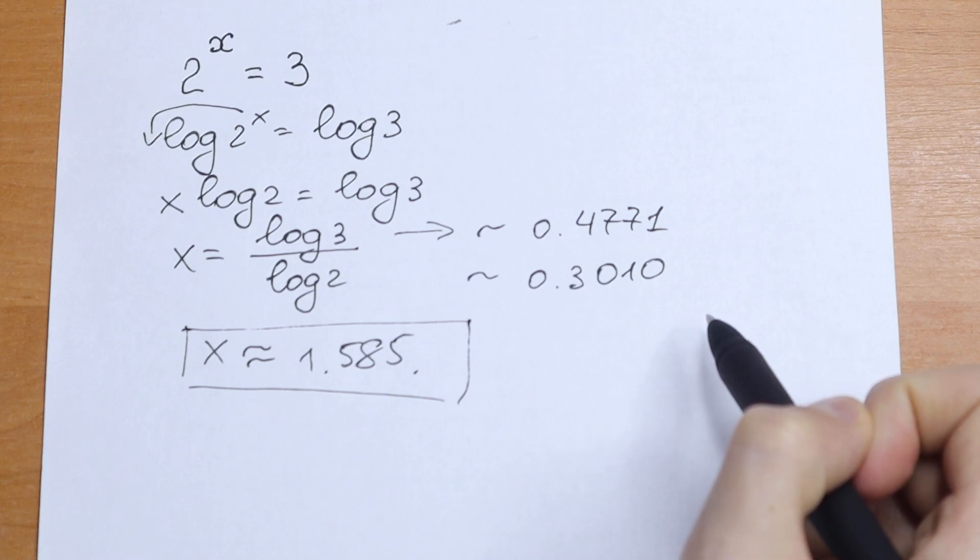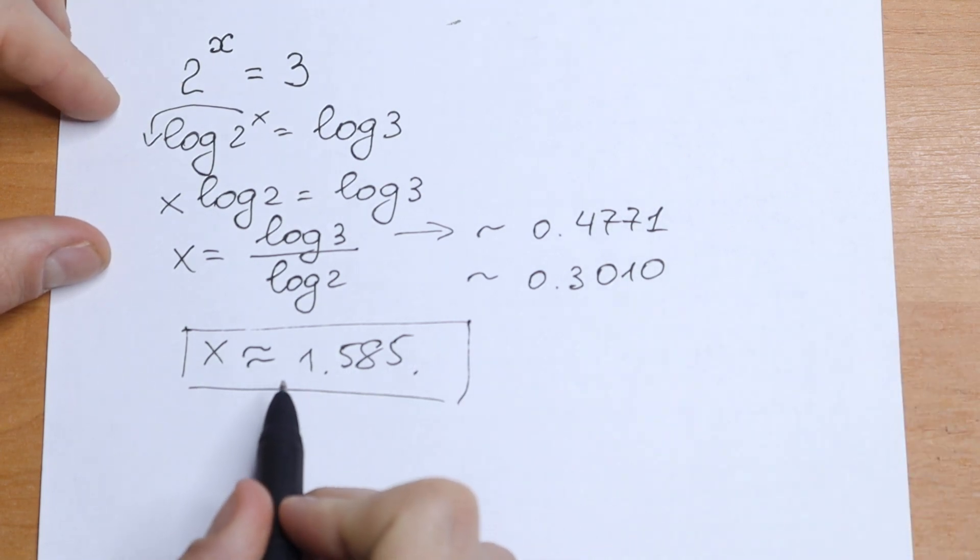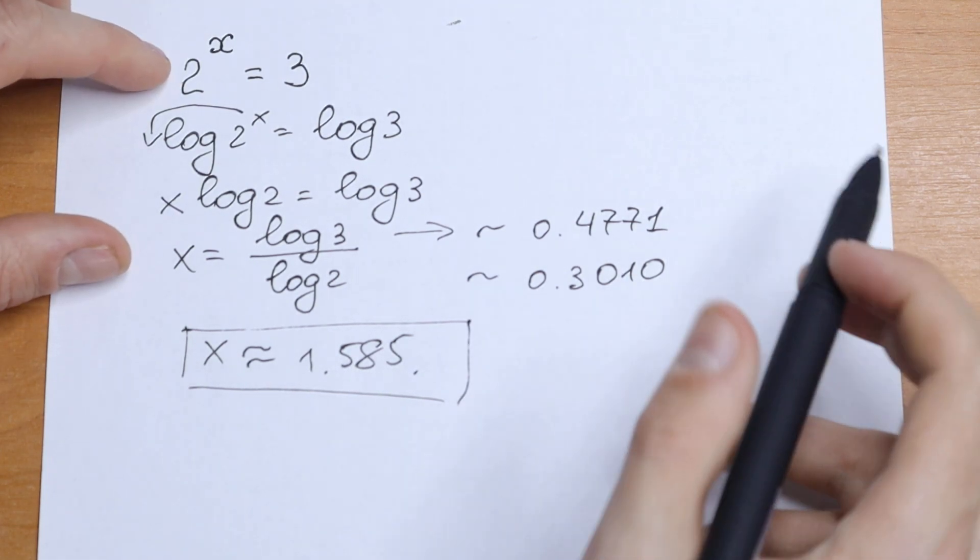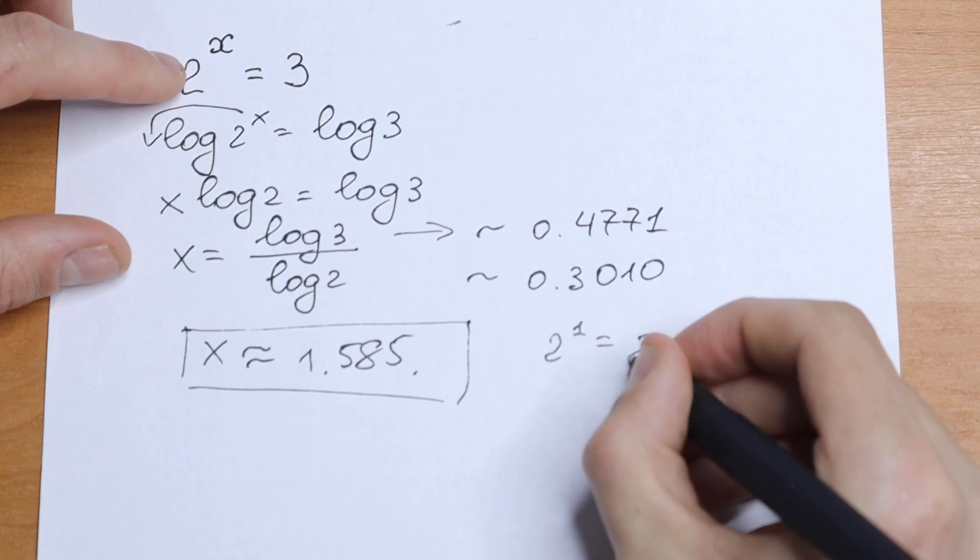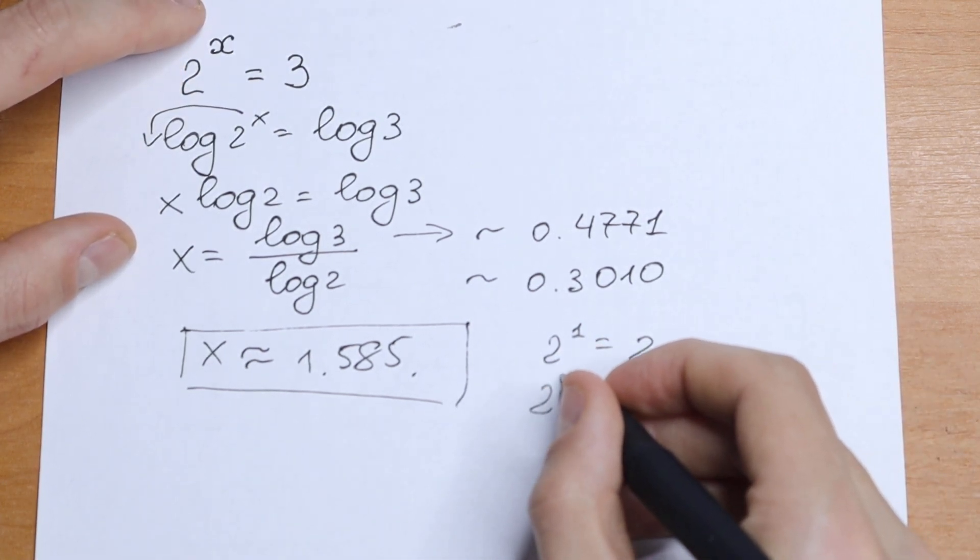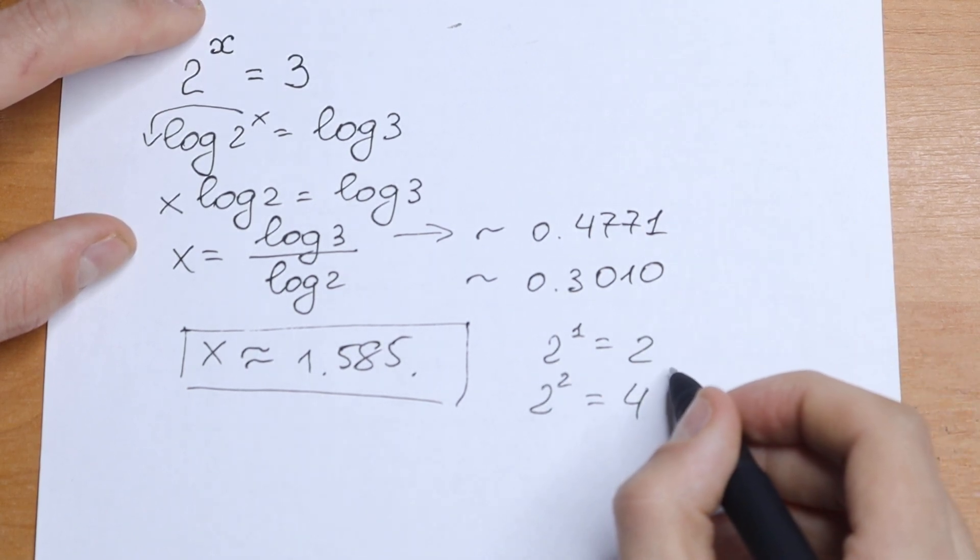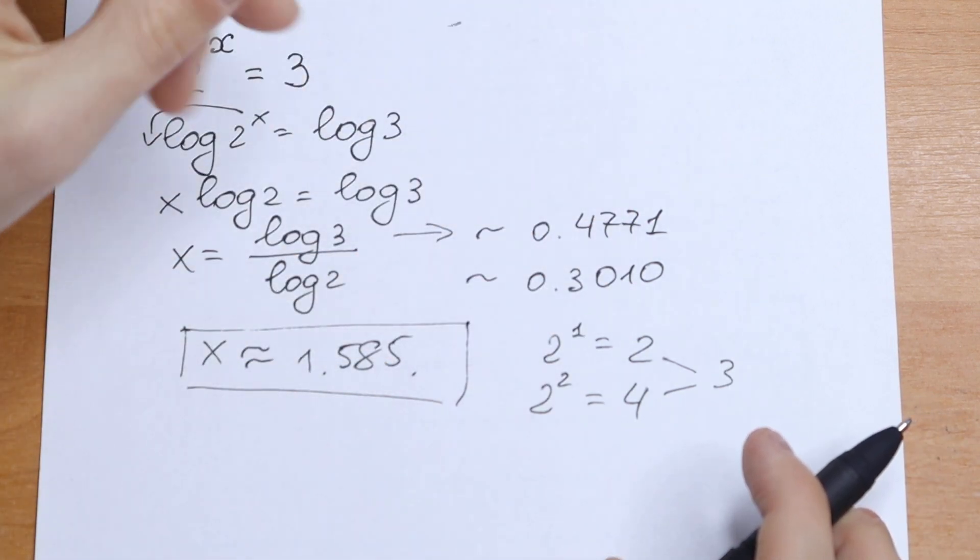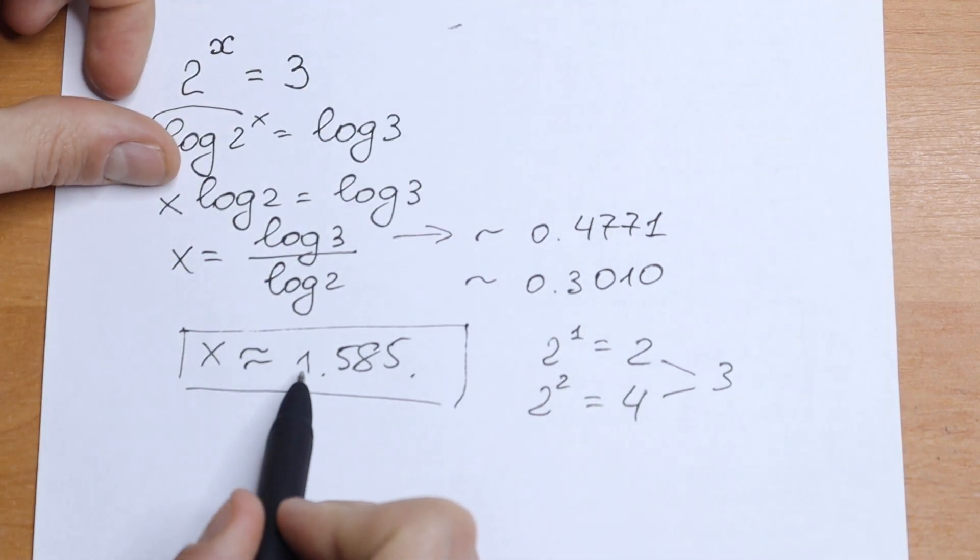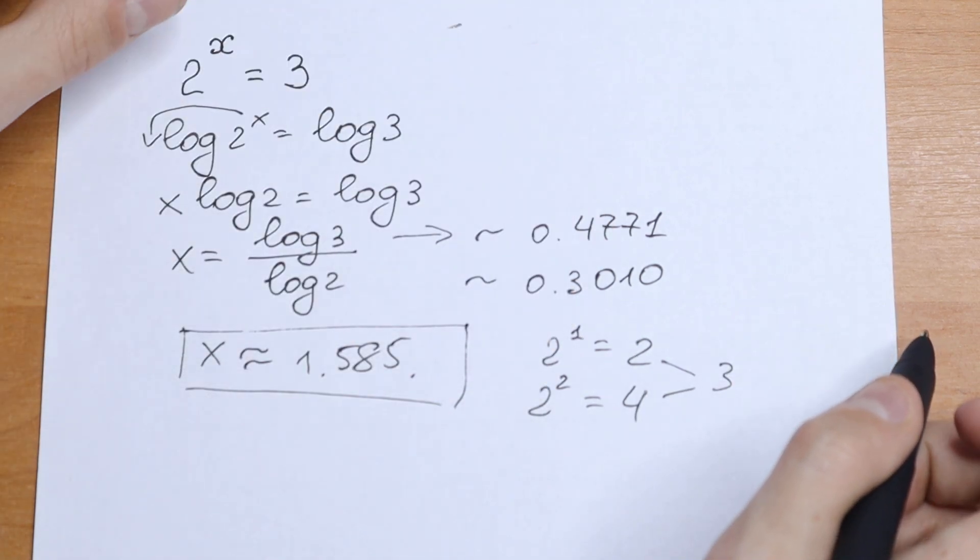If you have any question, suggestion, or maybe faster methods... This makes sense because if we have 2 to the first power we have 2, and 2 to the second power we have 4. We have 3 between these. It needs to be something in the middle. Our answer 1.585 looks right.